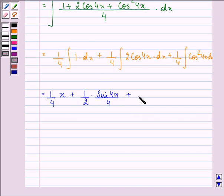now here we have 1 by 4 cos square, can be written as 1 plus cos 8x. Theta is 4x, so it will be 1 plus cos 2 theta by 2, where theta is 4x into dx.